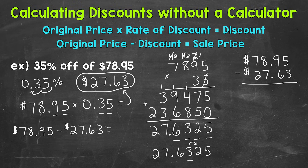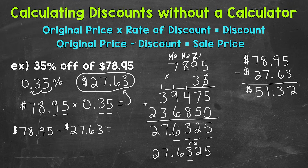With the decimals lined up, all our place values align. Starting with the hundredths: 5 minus 3 gives us 2. Then 9 minus 6 is 3. We bring the decimal straight down. 8 minus 7 is 1. And 7 minus 2 is 5. So we get $51.32. That is our final sale price: $51.32.